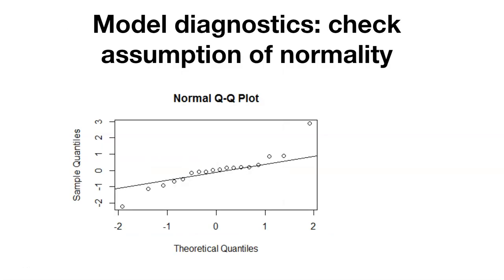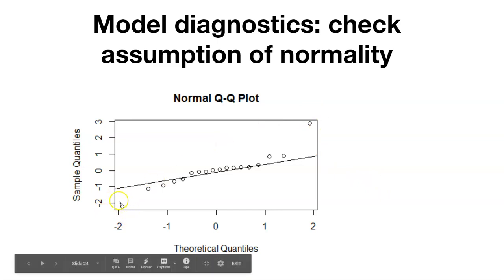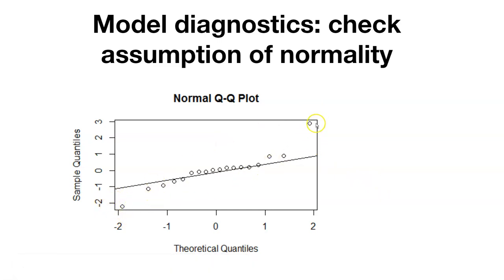Here's the QQ plot, or quantile-quantile plot, which we often use to test normality. Can we say that the data are normally distributed? It would be difficult. What I would think about doing is a transformation, because we have values at the extremes of the data that seem to be influential. We might think about transforming the data and doing a second analysis to test some of those assumptions of normality.